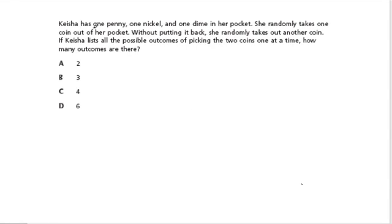In this problem, Keisha has one penny, one nickel, and one dime in her pocket. She randomly takes one coin out of her pocket, and the key phrase here is that she does not put the coin back. Once a coin is taken, it's not returned.